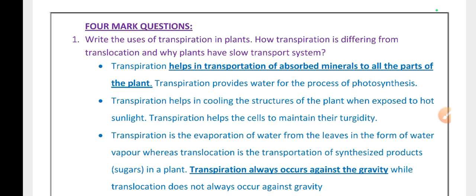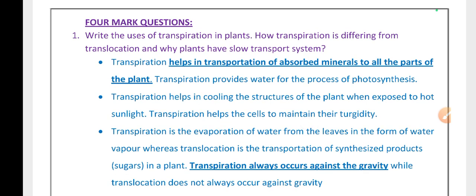Answer: Transpiration helps in transportation of absorbed minerals to all the parts of the plant. Transpiration provides water for the process of photosynthesis. Transpiration helps in cooling the structures of the plant when exposed to hot sunlight.